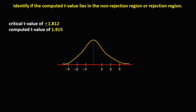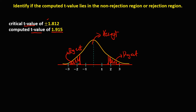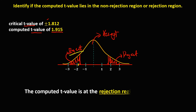For the fourth given, the critical t-values are positive and negative 1.812. The area beyond negative 1.812 is the rejection region, the area beyond positive 1.812 is also the rejection region, and the middle area is the acceptance region. The computed t-value is positive 1.915. Therefore, the computed t-value is at the rejection region.